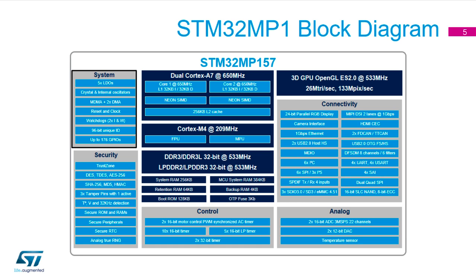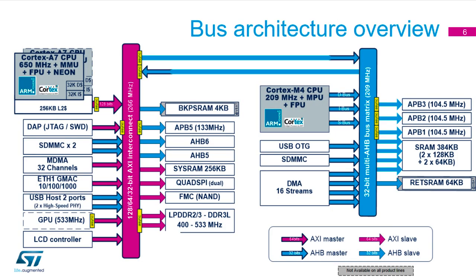Connecting all these blocks internally is quite a task. There are two internal memory buses: a high-speed AXI bus shown in pink and a slightly slower AHB bus. Certain peripherals are optimized for the A7 and others for the M4 depending on their nature, but each peripheral can work with both cores. For example, if you want Ethernet working with the M4 you can route it through — though you won't get gigabit, you can still use 10/100.